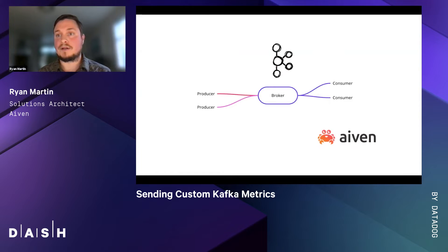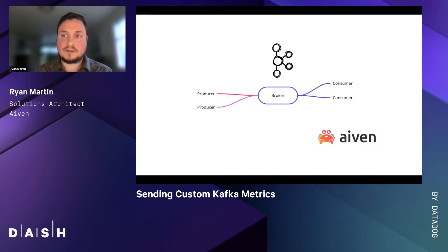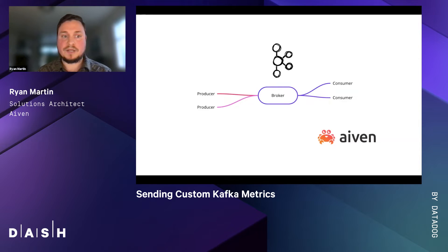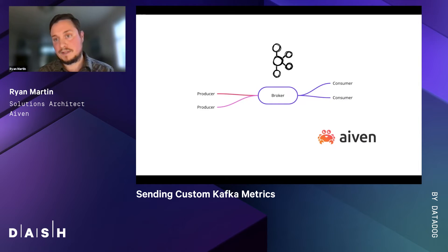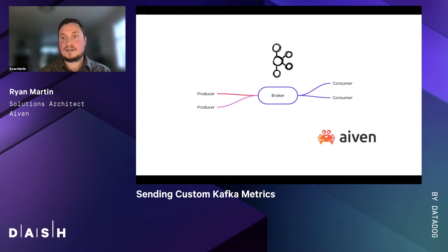A little bit of background on what Kafka is, in case you didn't know already. Kafka allows you to create a broker, and this broker allows the communication between a producer and a consumer. The producer connects to your data source and sends data to the topic in the broker. The consumer pulls the data from the topic. Essentially, Kafka just ships data or bytes from point A to point B.